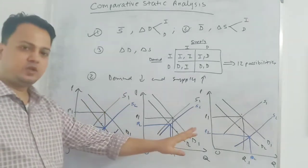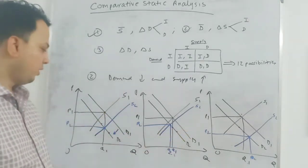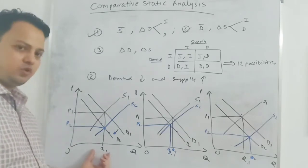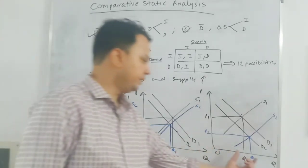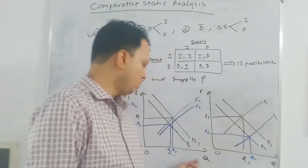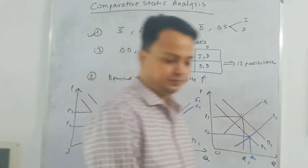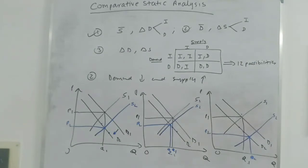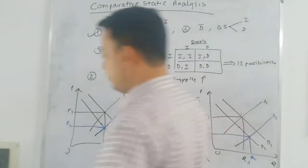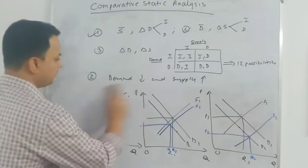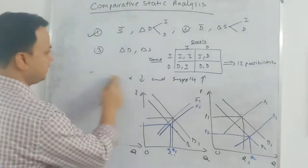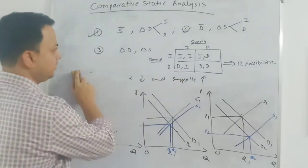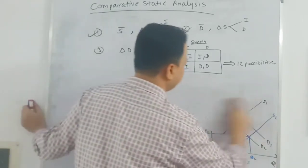The conclusion here: price for sure will be lower at the new equilibrium. Quantity can remain the same, or it can be higher or lower — it can increase from Q1 to Q2 or decrease. This is the third case: decreasing demand and increasing supply.